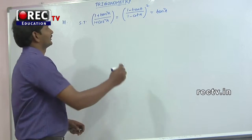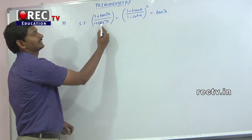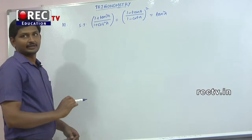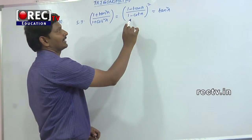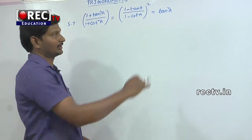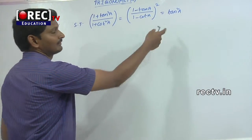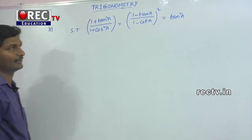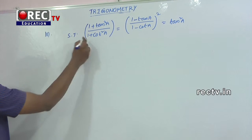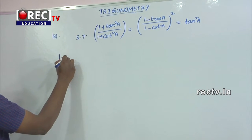Next question: show that (1 + tan²a) / (1 + cot²a) is equal to ((1 - tan a) / (1 - cot a))², and that both are equal to tan²a. We have to show that these three values are equal. First step: consider (1 + tan²a) / (1 + cot²a).